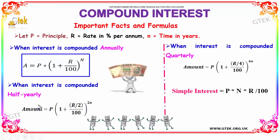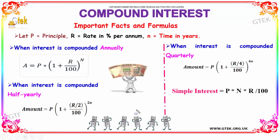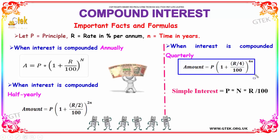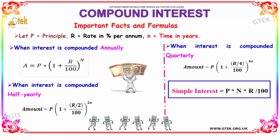Similarly, when the interest is compounded half yearly, the amount A is equal to P into (1 + r/2/100) whole power 2n. Similarly, when the interest is compounded quarterly, the amount A is equal to P into (1 + r/4/100) whole power 4n. For simple interest, I is equal to P into n into r by 100.